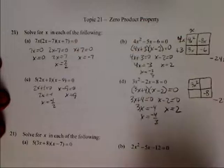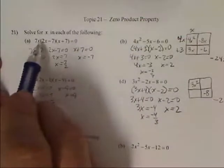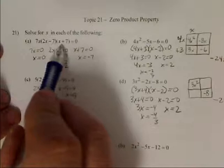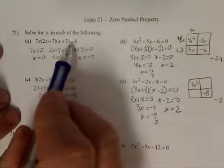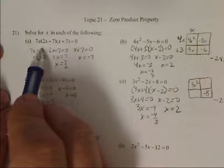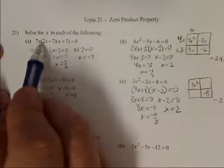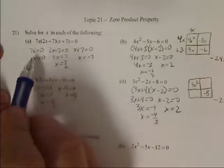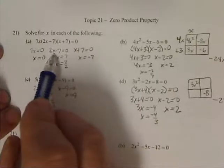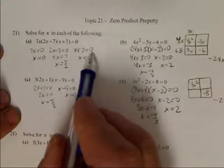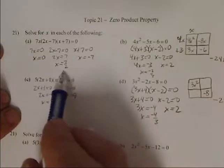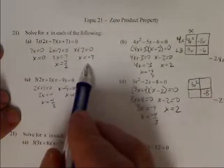So this is the zero product property. The first case right here, we already have it factored. So it's 7x times 2x minus 7 times x plus 7 equals 0. I'm going to set each factor equal to 0. So 7x, each factor has an x, so if there's no x in there, I won't put that equal to 0. So I get 7x equals 0, 2x minus 7 equals 0, x plus 7 equals 0. Solving for x, I get x equals 0, x equals 7 halves, x equals negative 7.